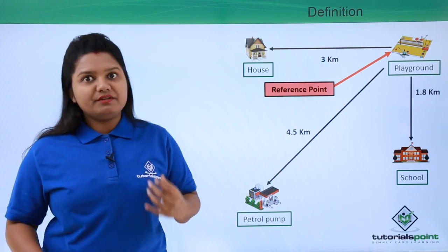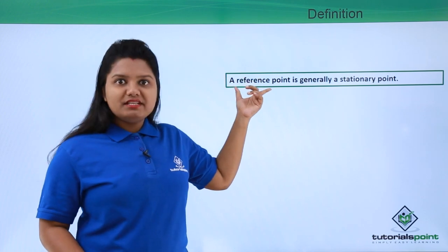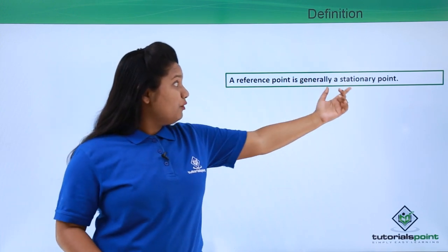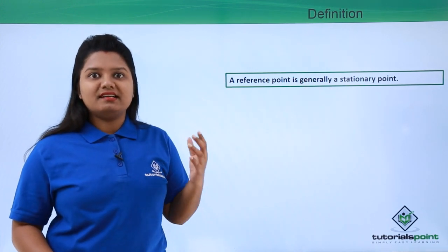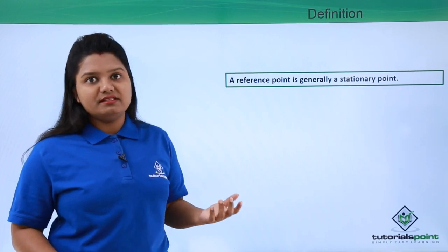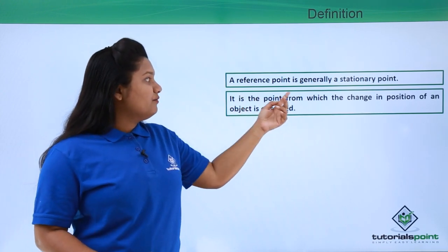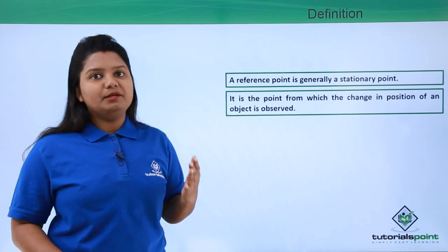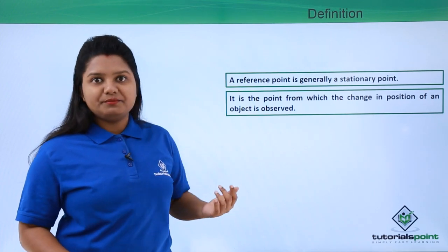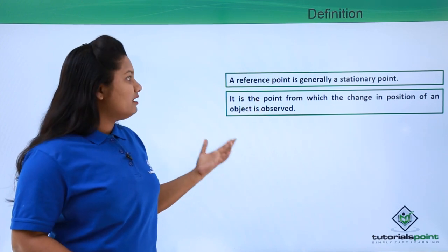When we consider a reference point, we generally consider it to be a stationary point — that is, a point which is at rest. Such points can generally be considered as reference points. A reference point is the point from which the change in position of an object can be observed.